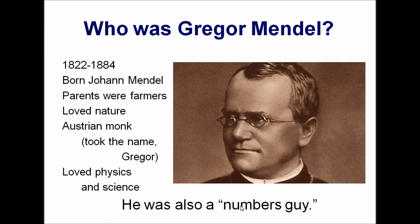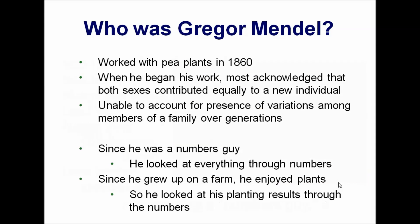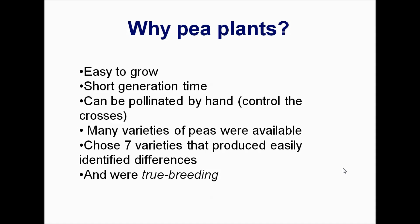Gregor Mendel was a numbers guy. He saw things in numbers, and that is why he became the father of all of our genetic research and the things that we see that are true today. He was born to parents that were farmers, and as he became older, became an Austrian monk. But he always loved physics and science. So while he was a monk, he started working with pea plants, and he started crossing them and seeing what traits would come out. He was very interested in this, and since he loved numbers, if you know numbers people, they remember anything about you that has a number associated with it, but they might not remember your name. He saw everything through those numbers.